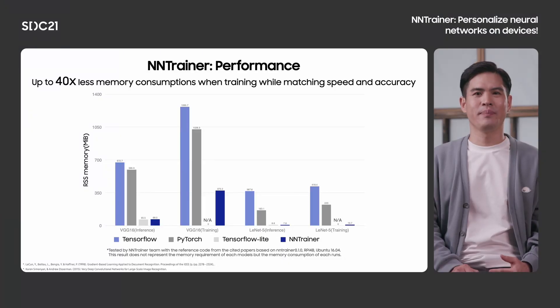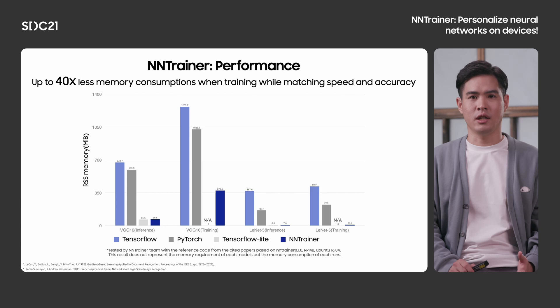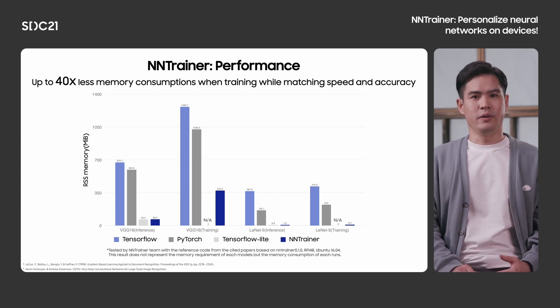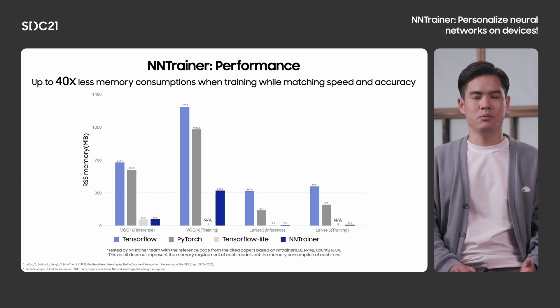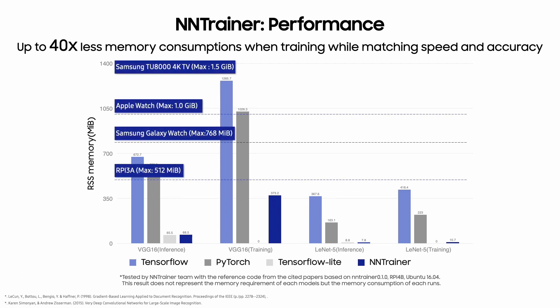Up until now, to enable training on-device, we've been focusing on optimizing memory usage. We made it possible to save the maximum RSS memory up to 40 times compared to other frameworks, while matching the time when running on CPU. The reason we focused on memory optimization is that for some low-power devices, the memory restriction is very harsh — for example, the Samsung Galaxy Watch has only 768 megabytes of memory, and you wouldn't be able to train a VGG16 model with it.